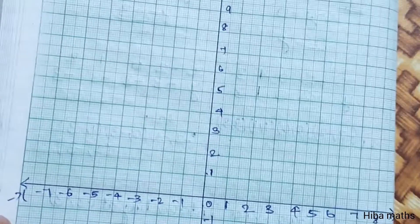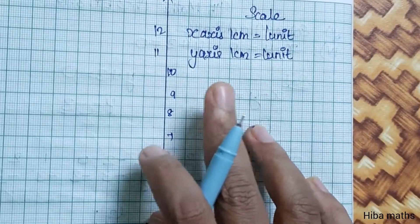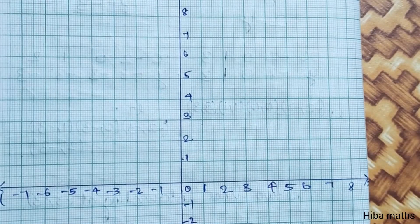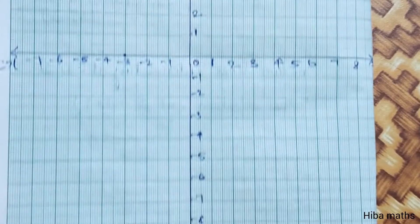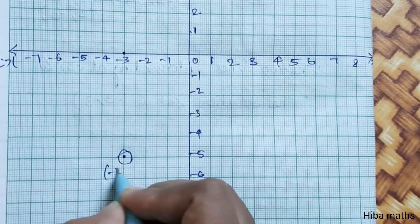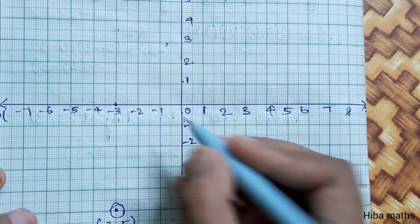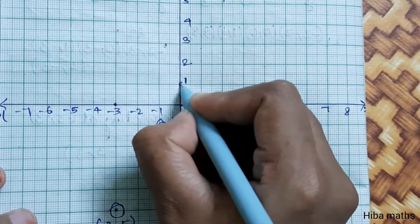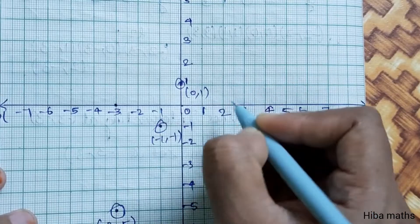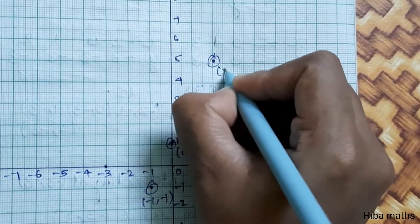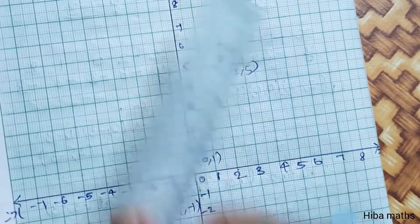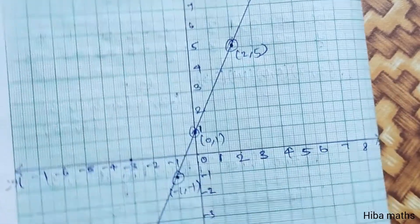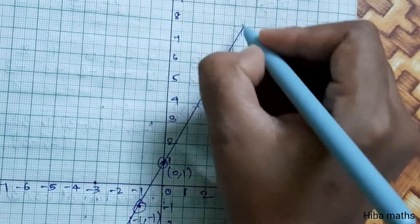Now let's plot the graph for Line 1. We set the scale with x-axis equal to 1 and y-axis equal to 1. We plot the points: (minus 3, minus 5), (minus 1, minus 1), (0, 1), and (2, 5). Joining these points gives us Line 1, labeled L1.